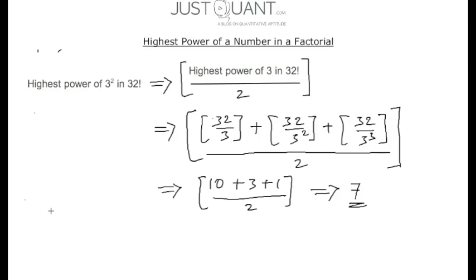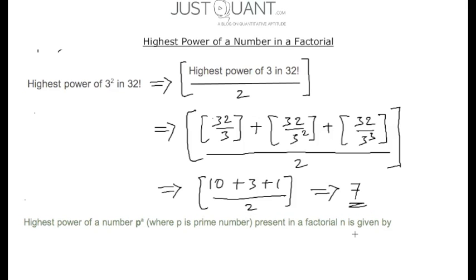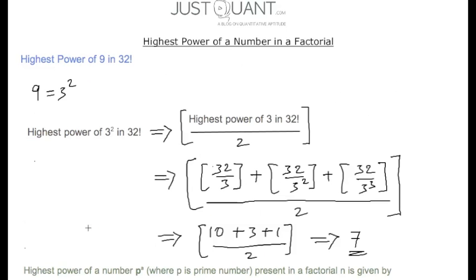In general, the highest power of p^a present in n factorial, where p is a prime number and a is a positive integer, is given by the greatest integer that is less than or equal to the highest power of p in n factorial, divided by a. With this I would like to end the video — I hope it's clear. Thanks for watching.